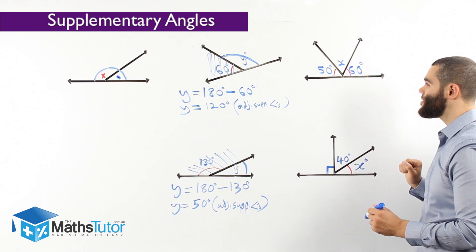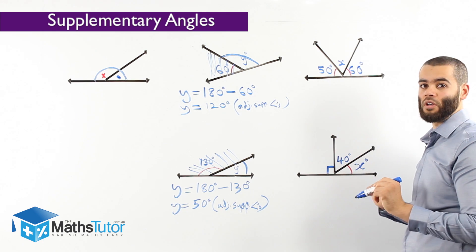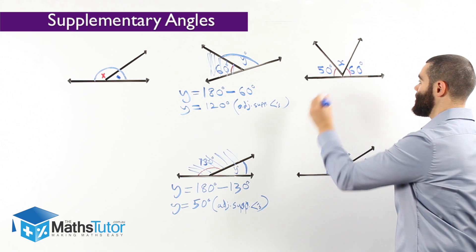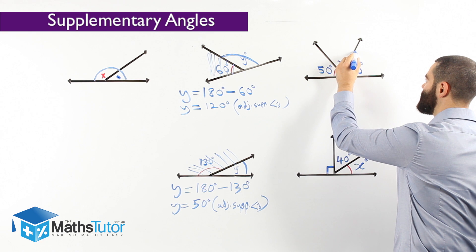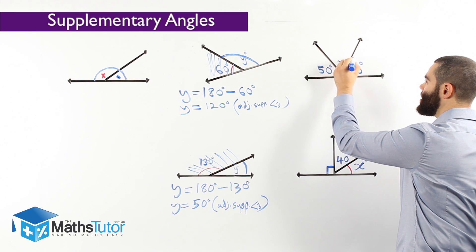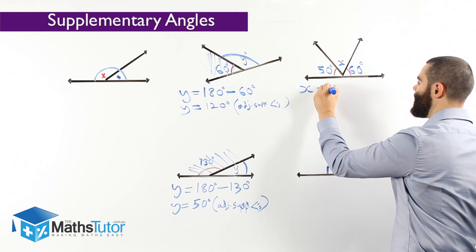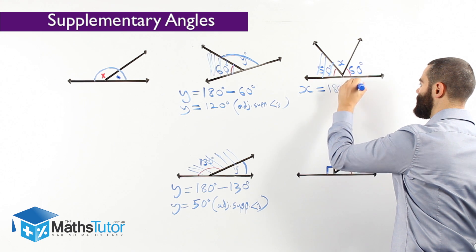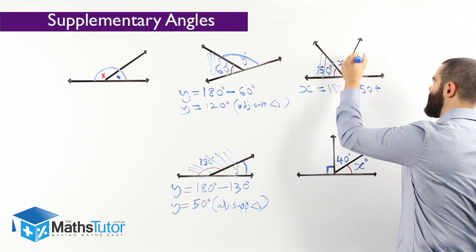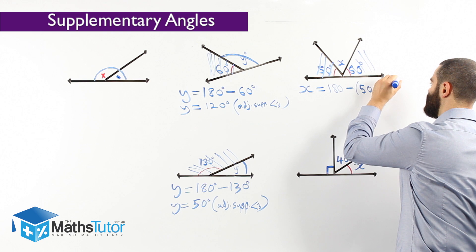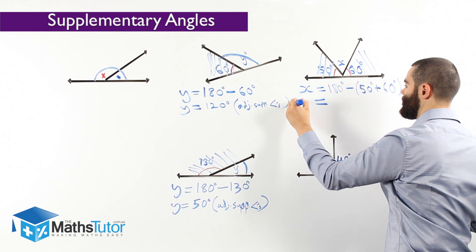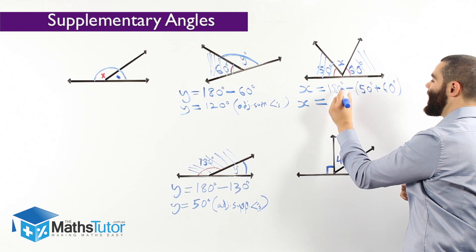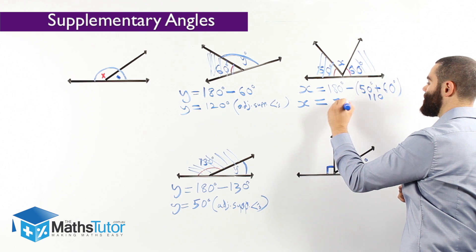This angle here is also a supplementary angle — a straight line divided into more than two parts. In this case, we have three angles divided in this straight angle. We have 50 here and 60 here, and we are trying to work out x on this side. X is 180 degrees — the total — take away the 50 and take away the 60 as well. 50 and 60 is 110. 180 take away 110 means x is 70 degrees.